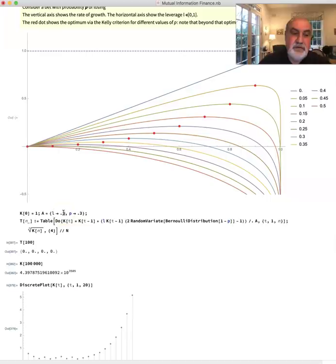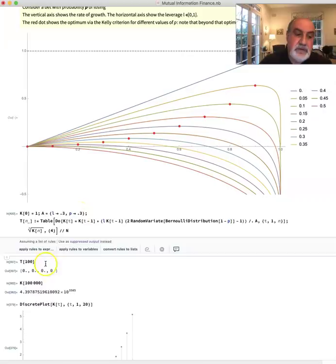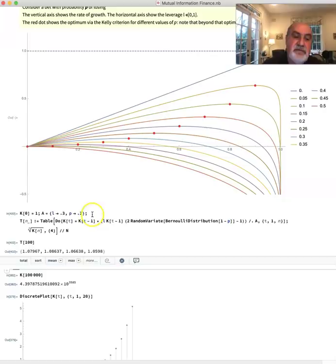So let's say that you allocate at 0.3. I allocate at 0.3. There you go. You have T100. You have a 7% rate of return.